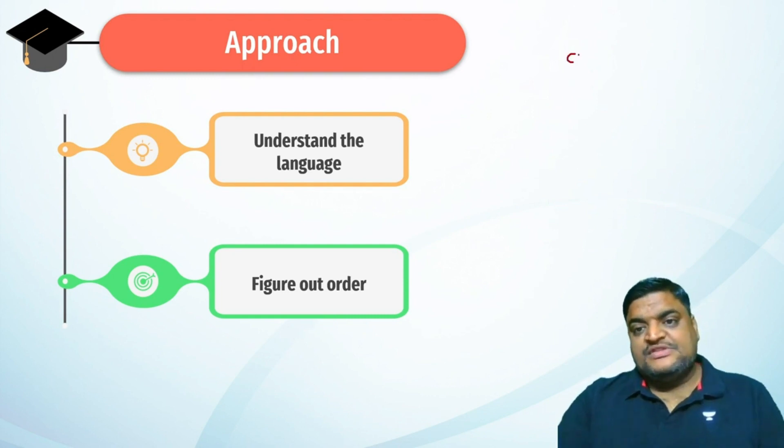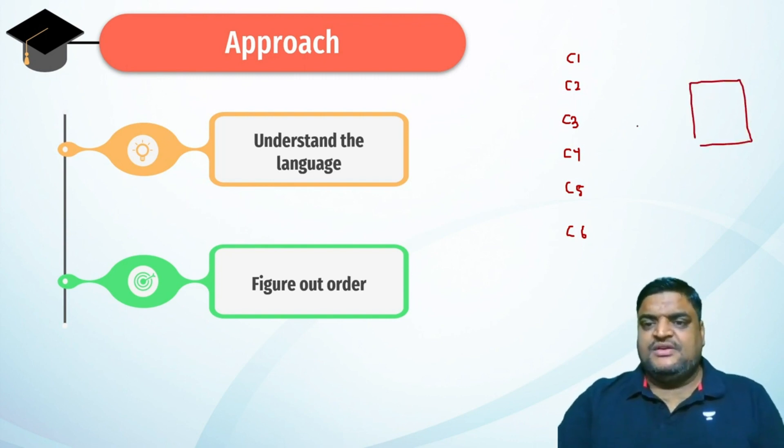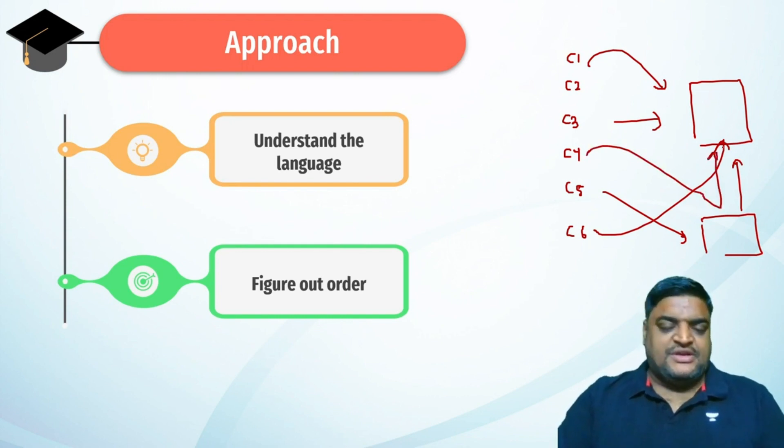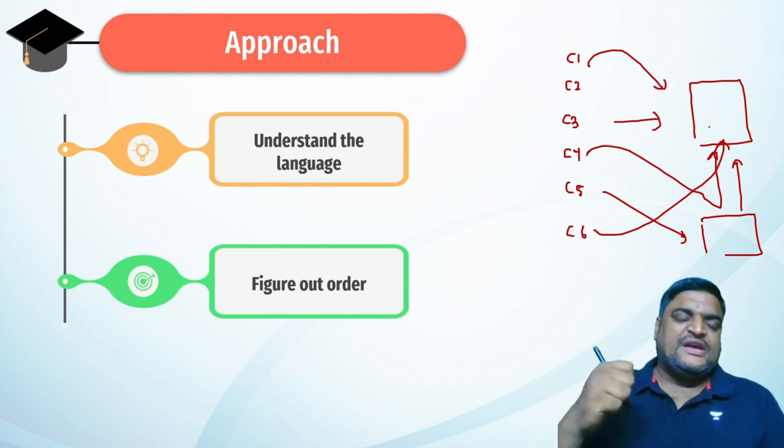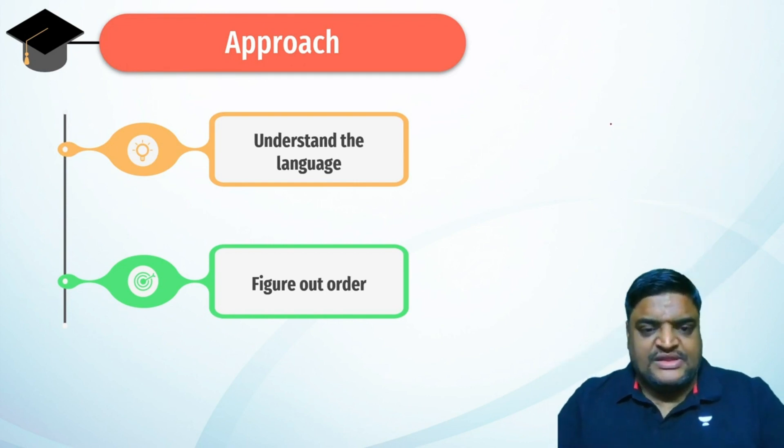But what happens if the clues are jumbled up? C1 makes no sense, C2 makes no sense, C3 creates a picture, C4 makes no sense, C5 creates another picture. Then C6 can be put into this picture, C5 can be put into this picture, C1 can be put into this picture, then C4 can be put. If the clues are jumbled, the question is difficult. That's the only thing you need to figure out.